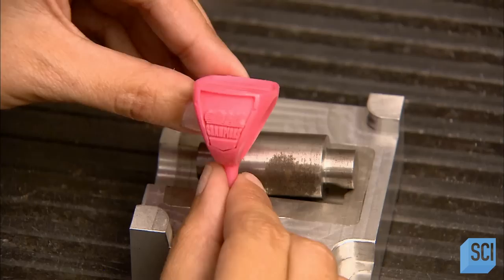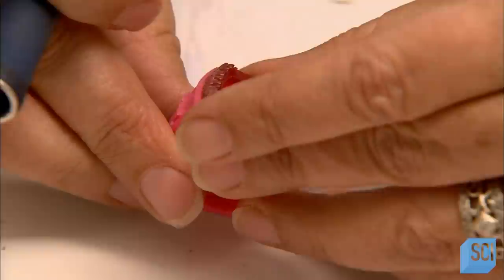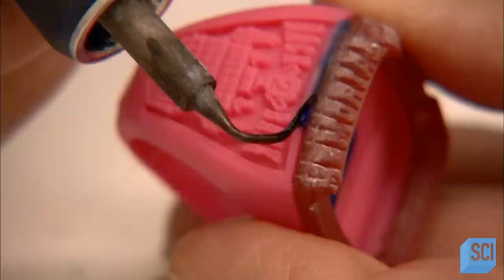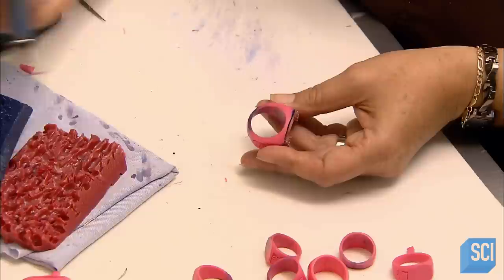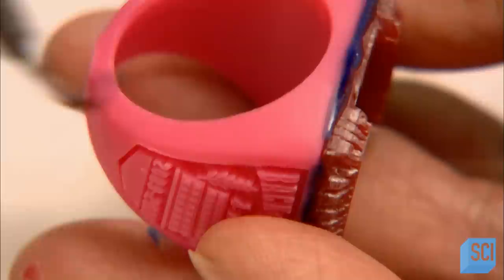The next step is to assemble the wax models of two of the ring's components, connecting the parts with joining wax, applied using a fine-tipped soldering iron. It's at this stage that they also size the ring for the customer, either cutting out a section of the shank to downsize, or adding to the shank to enlarge.